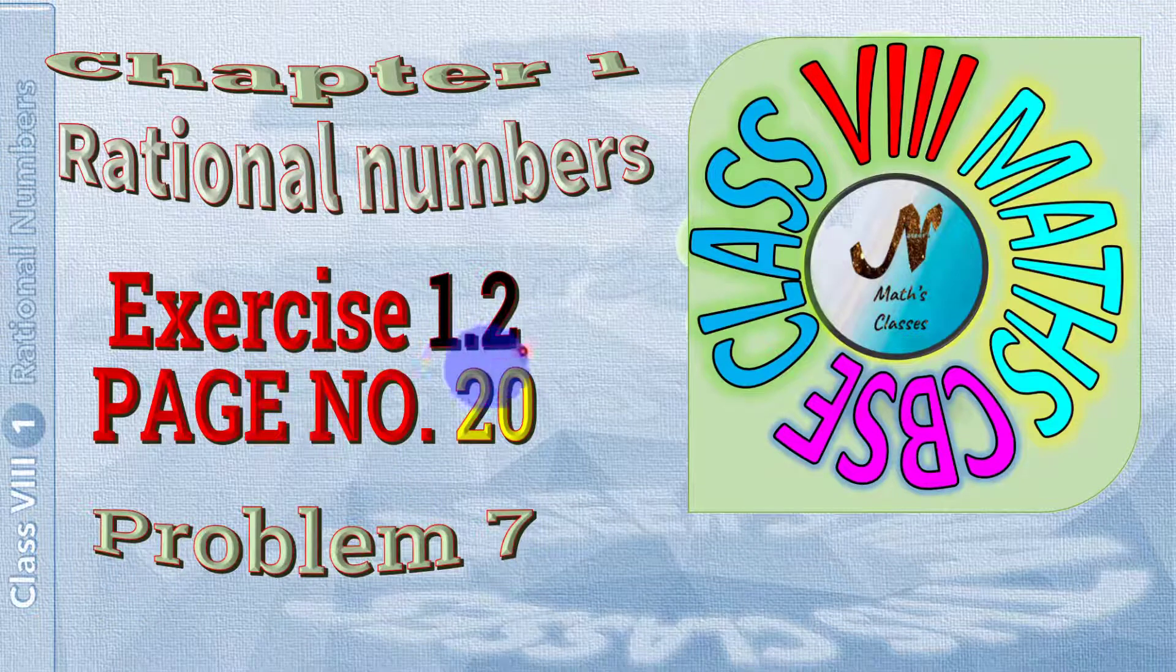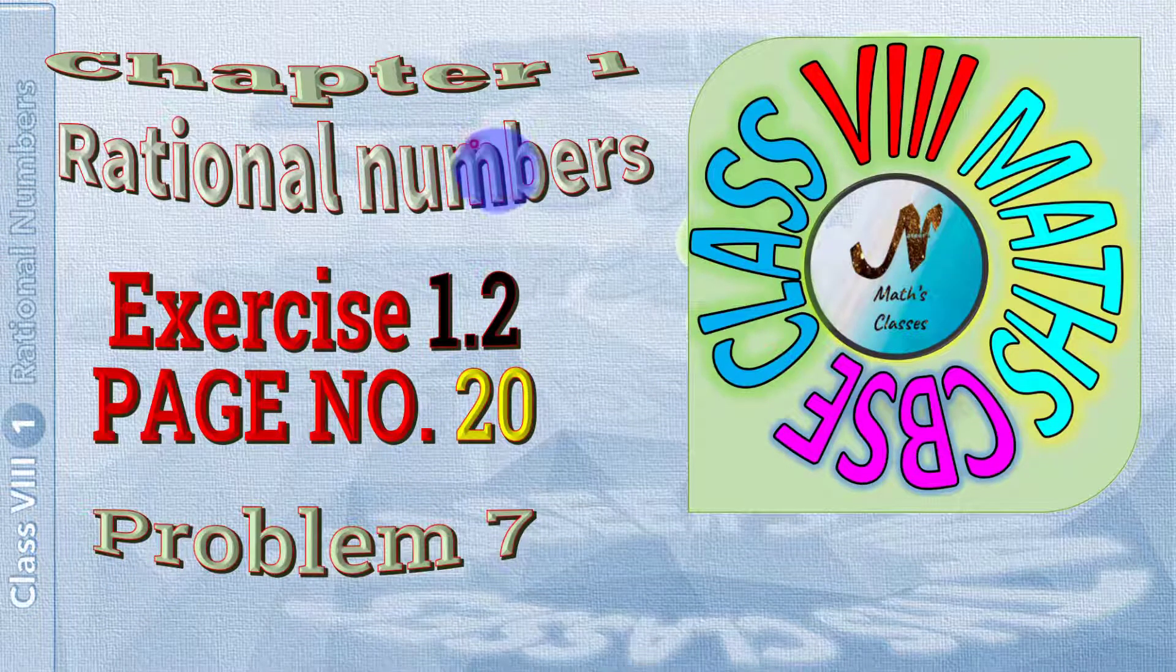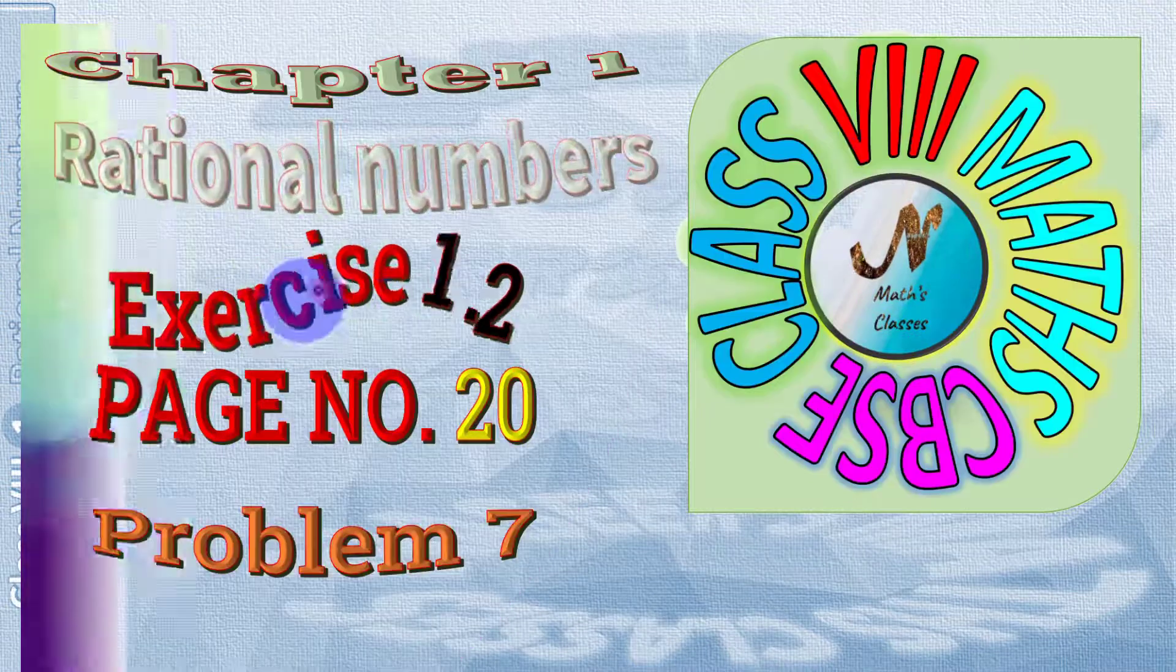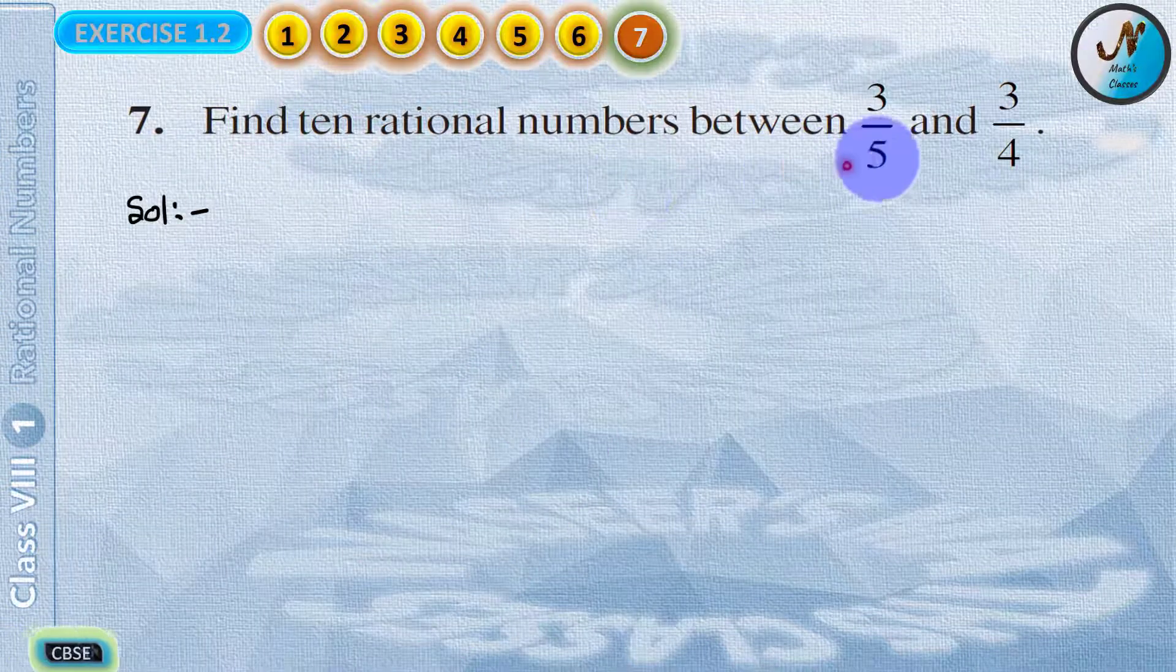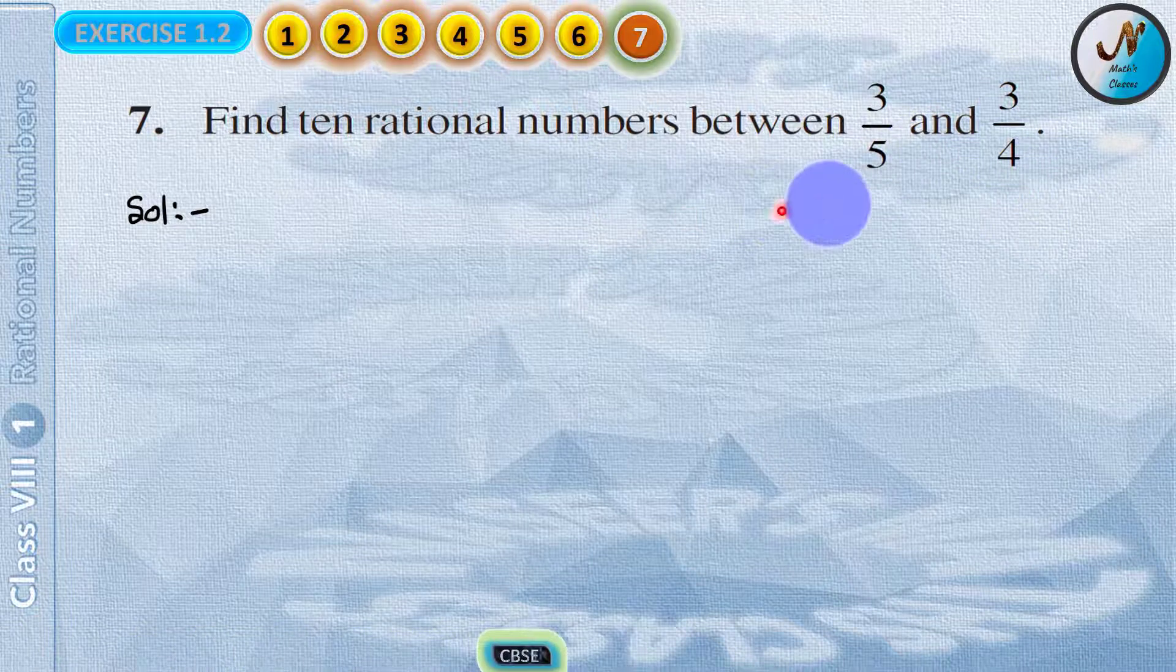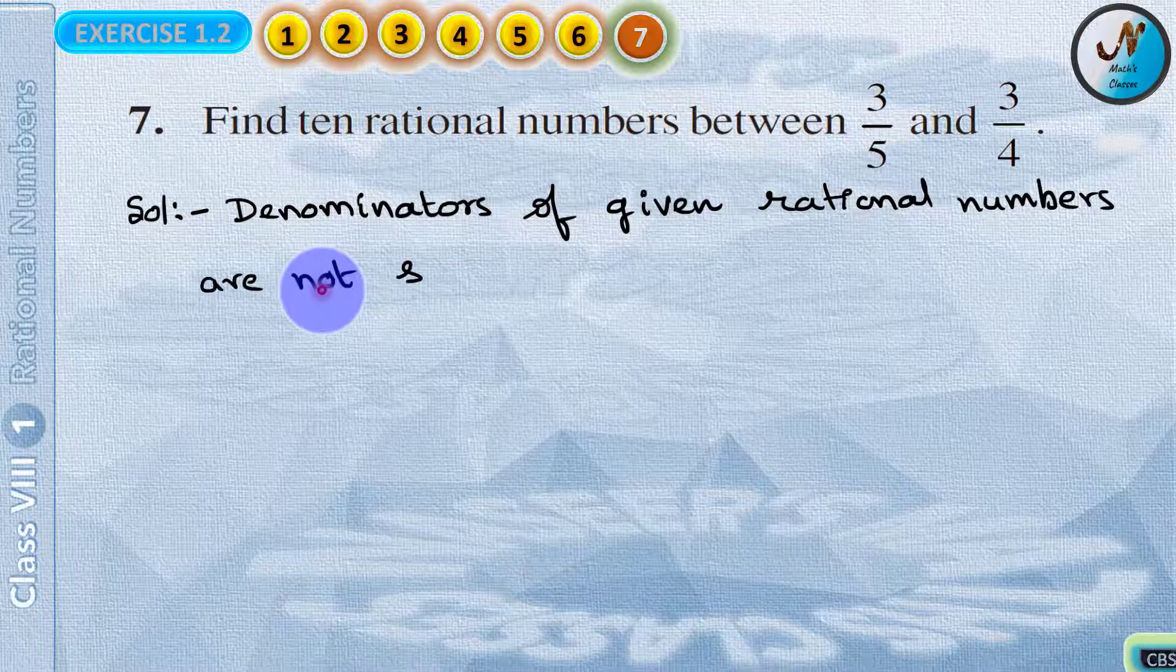To solve problem 7 exercise 1.2 page number 20 chapter 1 rational numbers class 8. In this problem it is given that find 10 rational numbers between 3 by 5 and 3 by 4. Here given rational numbers denominators are not same.